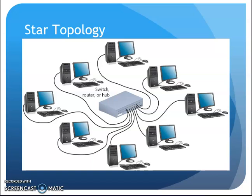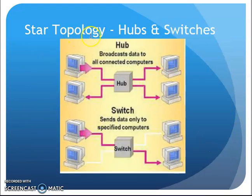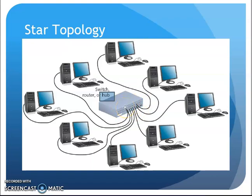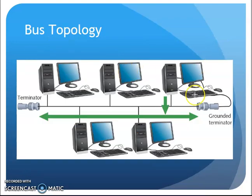So we now had network admin advantages: a cable problem only affects that computer, you can replace the cable and be good to go, and you have link lights for diagnostics. But initially, the hub is a Layer 1 device — when a piece of data gets sent into the hub from a computer, it literally repeats it to all nodes in the network. So when these networks were hooked up with a hub and a computer sent data in, the hub repeated it to all other computers.